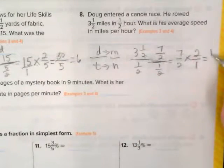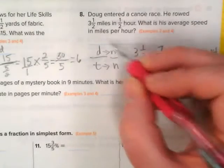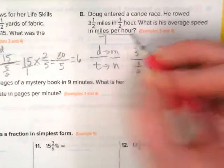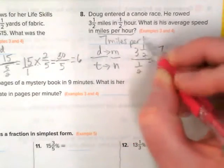I would do 14 over 2. 14 divided by 2 is 7, so it's 7 miles per hour.